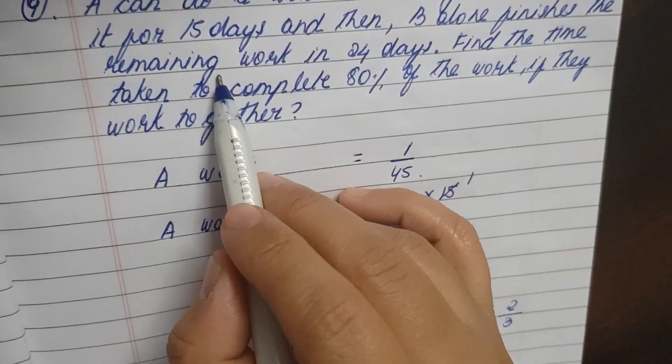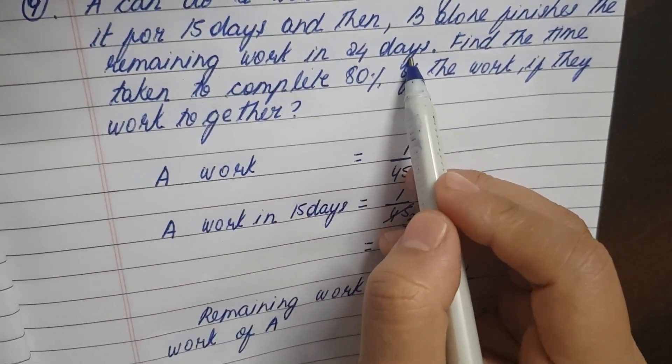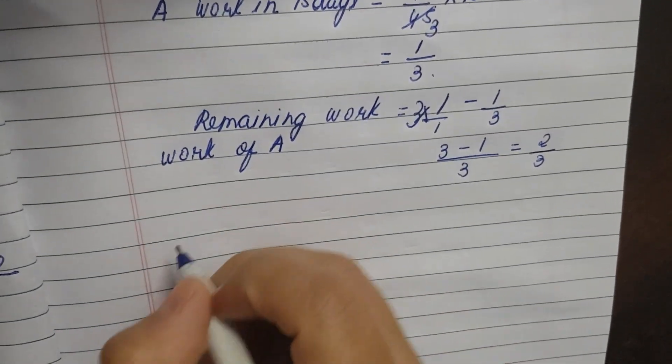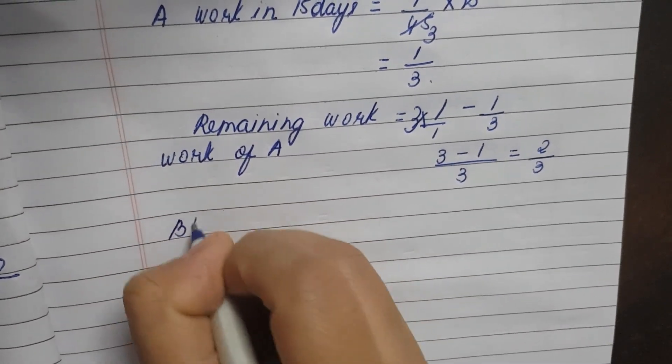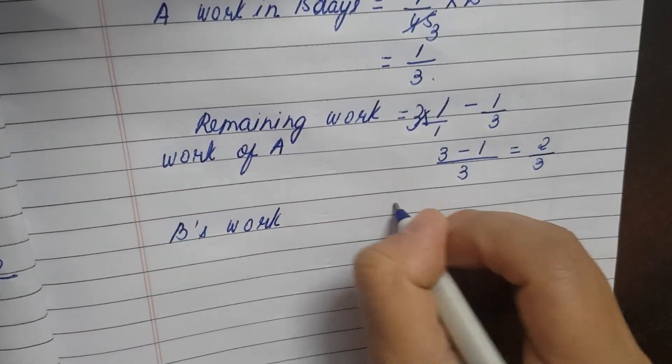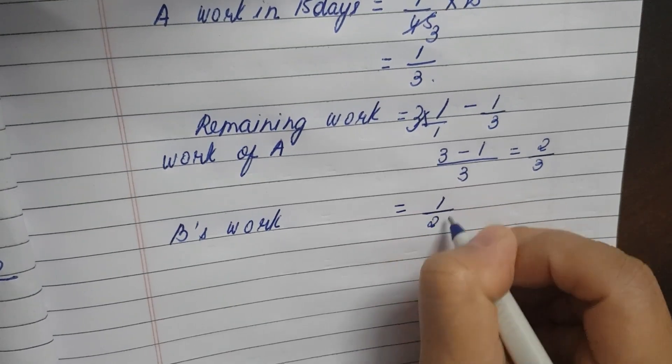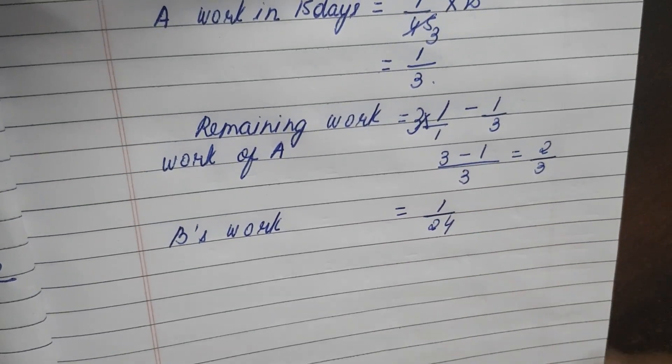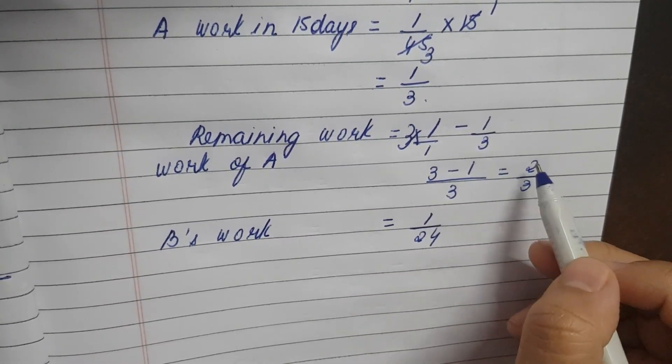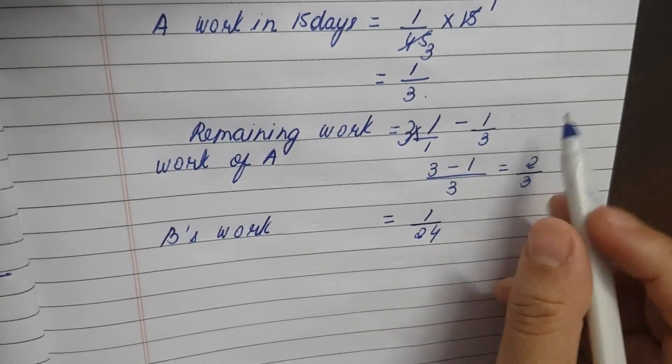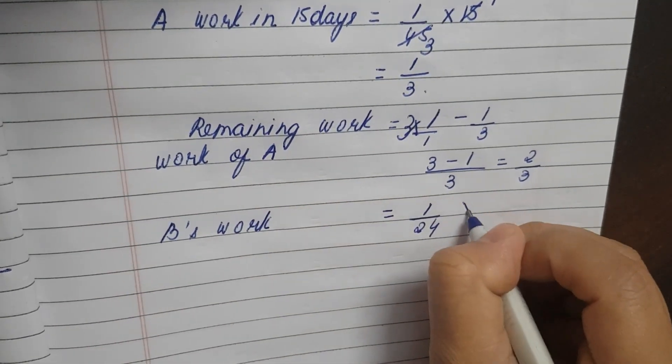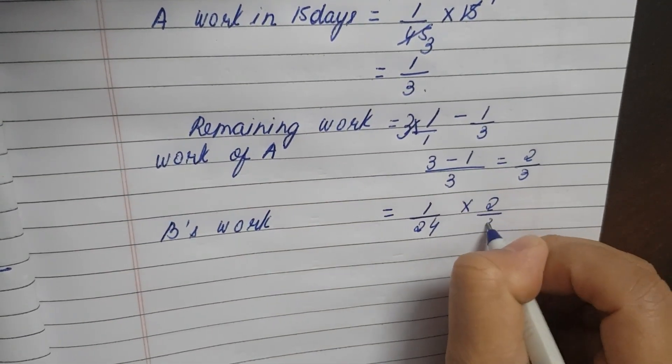B alone finishes the remaining work in 24 days. So B's work is equal to 1 by 24. In the 1 by 24, he is taking the remaining work. So remaining work, who is doing it? B is completing it. So into 2 by 3.